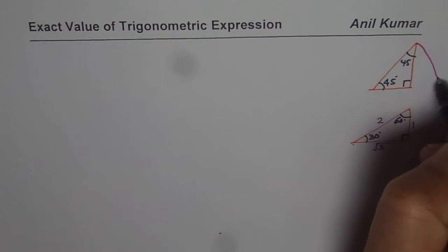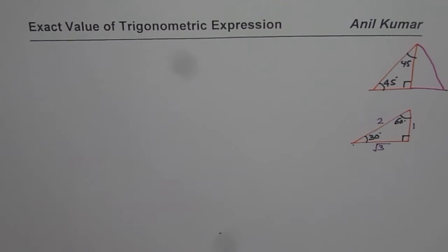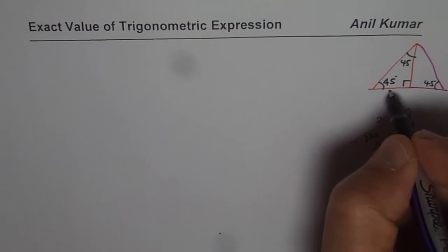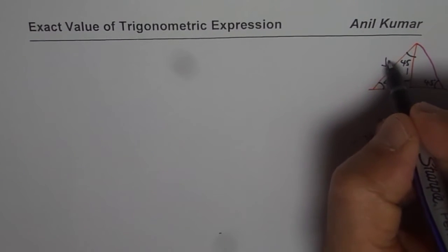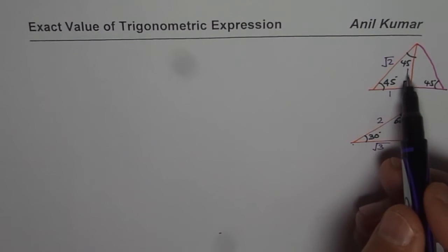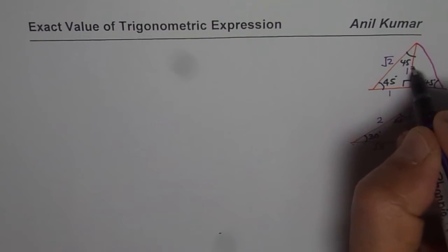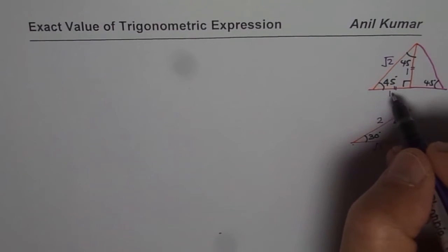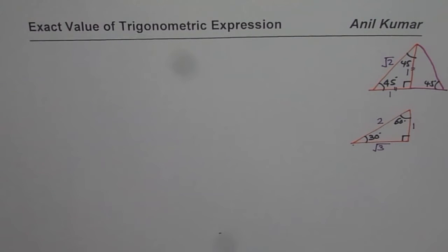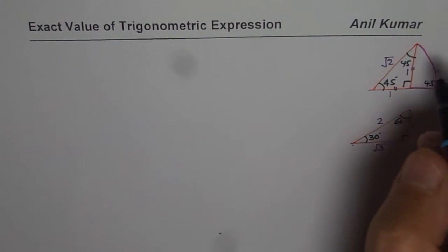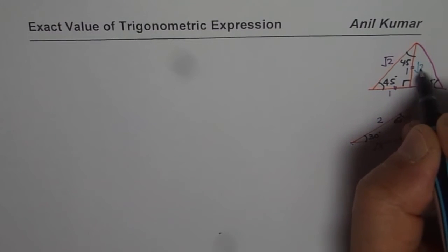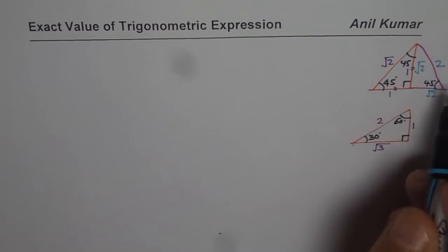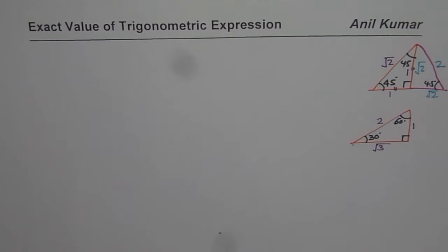For the 45-45-90 triangle, we normally take sides as 1, 1, and square root of 2. It's an isosceles triangle where the two legs are equal. Alternatively, you can multiply each side by square root of 2, giving sides of square root 2, square root 2, and 2. I'll show how both versions can be useful.